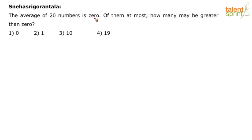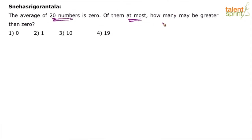The average of 20 numbers is 0. Of them, at most how many may be greater than 0? That is the question — maximum how many of these 20 numbers can be greater than 0?